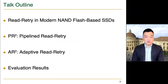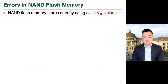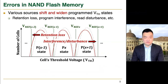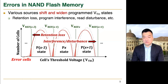I'm going to start my talk with a brief overview of read retry. NAND flash memory stores data by adjusting a cell's threshold voltage values. This figure shows a part of the threshold voltage distribution of a page, where each threshold voltage state can be distinguished by using the corresponding read reference voltage values. Various error sources shift and widen the threshold voltage states.